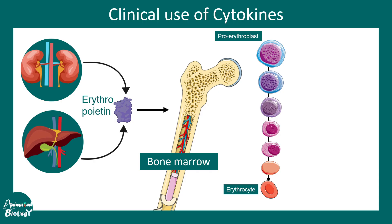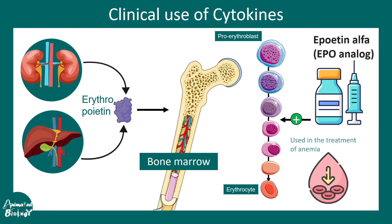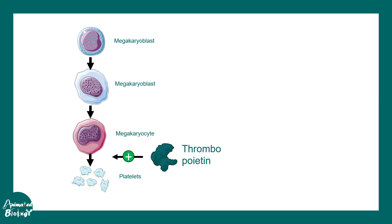Sometimes there is a problem in red blood cell production that leads to anemia. That is why in those treatments, erythropoietin or an erythropoietin analog can be a very useful substance — it could definitely be useful for treating anemia.